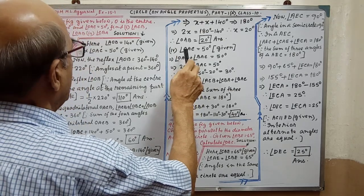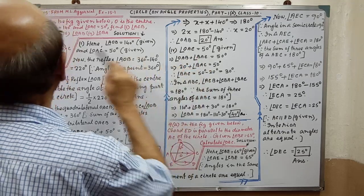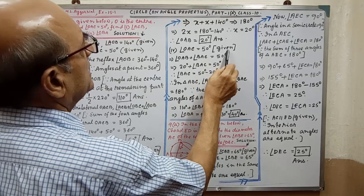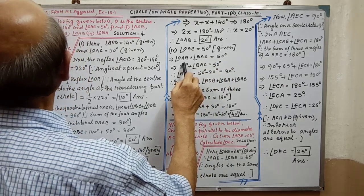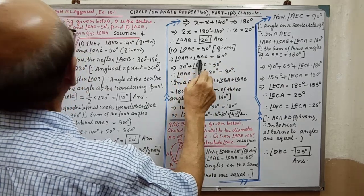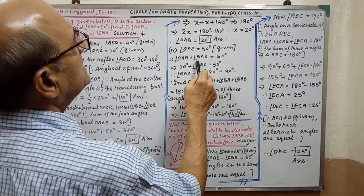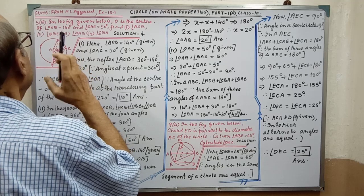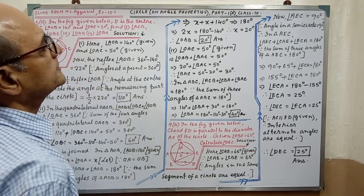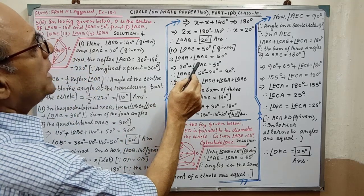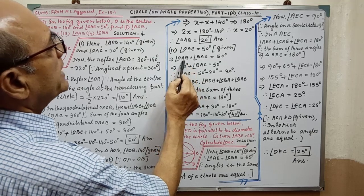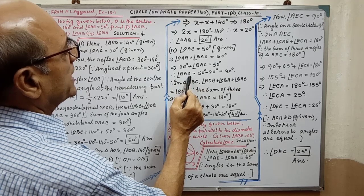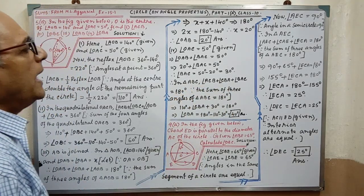Next, fourth part: angle OAC equal to 50 degree — given. Angle OAB plus angle BAC equal to 50 degree. That means at this point there are two angles — OAB and BAC. The angle value of OAB is 20. By simplifying, we are getting angle BAC equal to 30 degree.